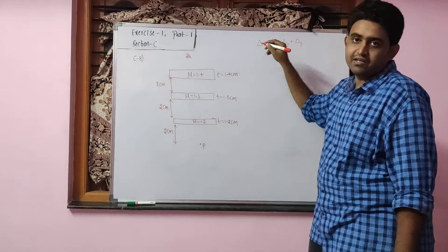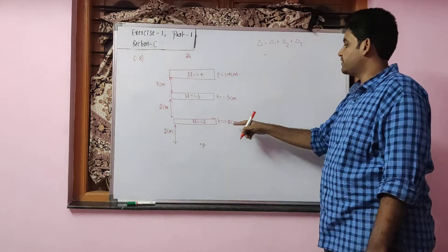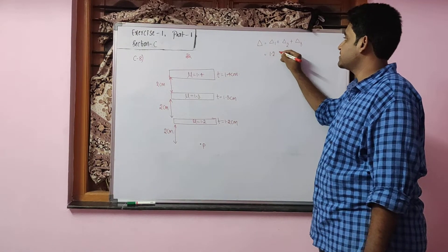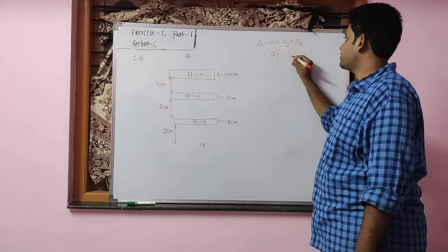We know the formula T into 1 minus 1 by μ. For the first glass slab, thickness is 1.2 cm into 1 minus 1 by 1.2.